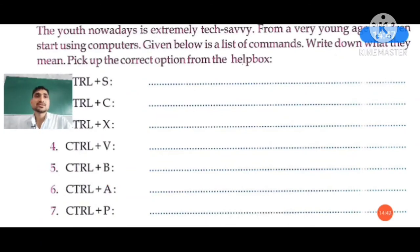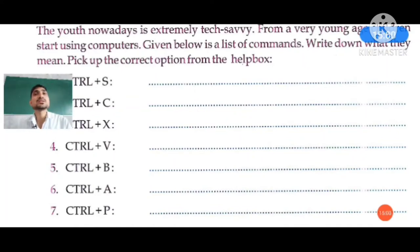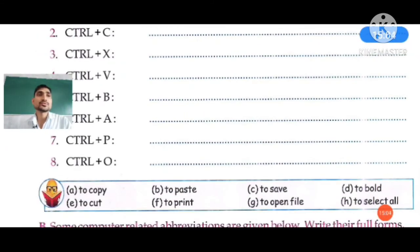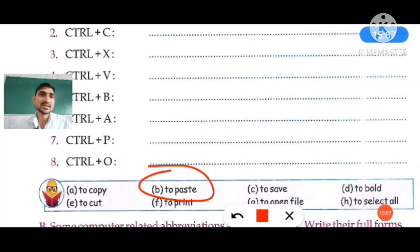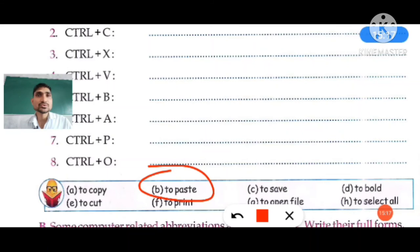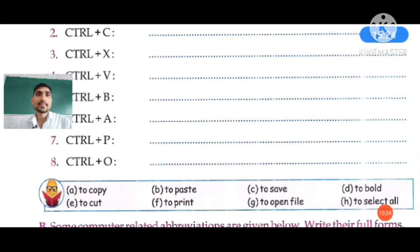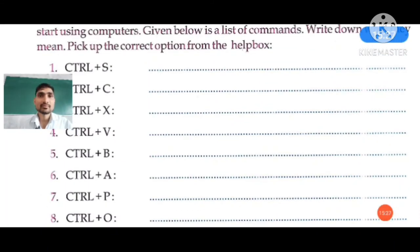Question four: Ctrl+V. If you have cut or copied something and want to place it somewhere, you press Control+V to paste. Paste means placing the cut or copied content anywhere you want.